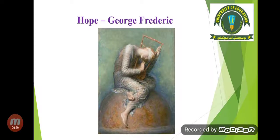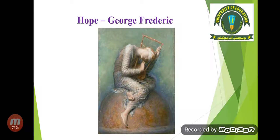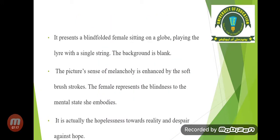In this painting titled 'Hope' by George Frederick, you can see a female figure sitting on a globe which symbolizes the world. The background is very blurry. This is an example of symbolic and conceptual painting. The artist has tried to develop idea and creativity — it presents a blindfolded female sitting on a globe playing a lyre with a single string.